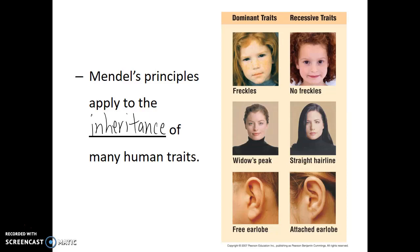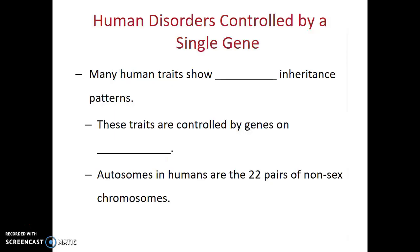For example, freckles is dominant to no freckles. Having a widow's peak is dominant to having a straight hairline. Having free earlobes is dominant to having attached earlobes. In all of these cases, these traits are controlled by a single gene, and there are two common alleles — one dominant and one recessive. So many human traits show these simple inheritance patterns. These traits are controlled by genes on the autosomes.